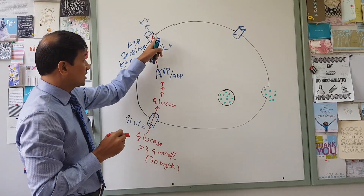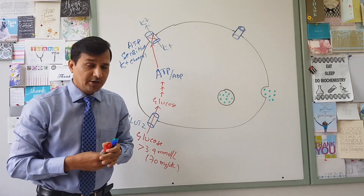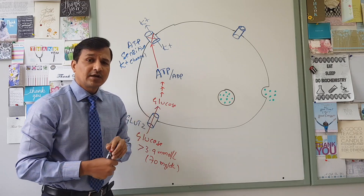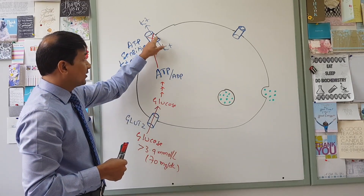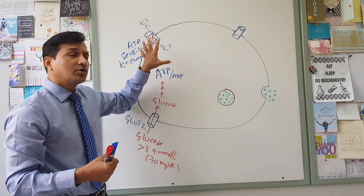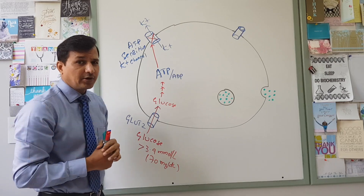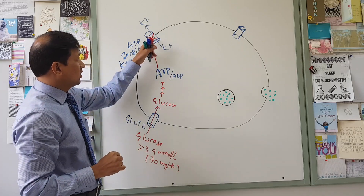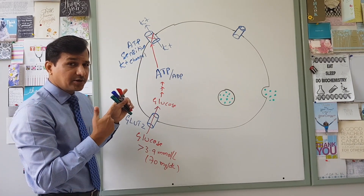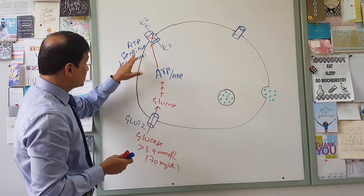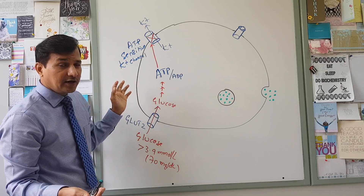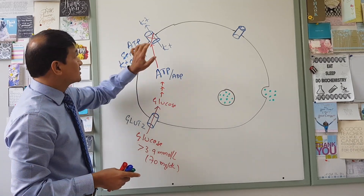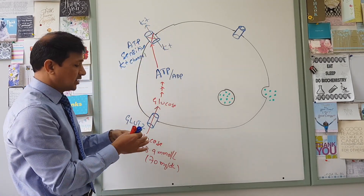Note that the potassium channel has sulfonylurea subunits. Sulfonylureas are a group of drugs used in the treatment of diabetes mellitus — sulfonylurea binding to those subunits will also block the potassium channel. ATP binding to the ATP-sensitive potassium channel closes the channel — that is why it is called ATP-sensitive, because ATPs are the regulator of the potassium channel in beta cells of the pancreas.